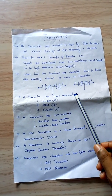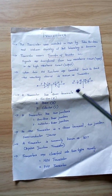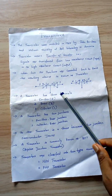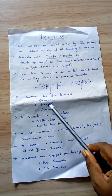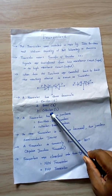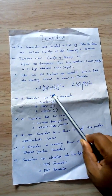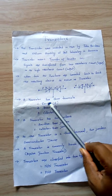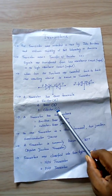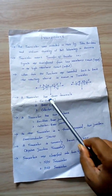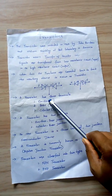For a transistor, it has three terminals: one is the emitter, another one is the base, and another one is the collector. Emitter can be represented as E, base can be represented as B, and collector can be represented as C.